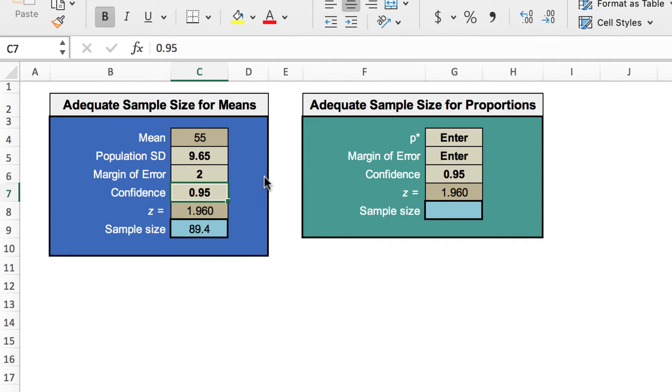And our confidence interval is .95, although in other circumstances we could change that to a .90 or a .99 or other value. With a confidence interval of .95, we have a z-score of 1.96 because, again, we're approximating using a normal distribution.